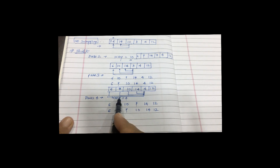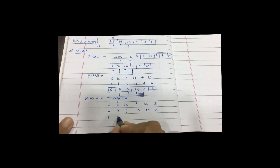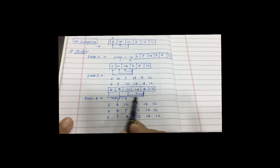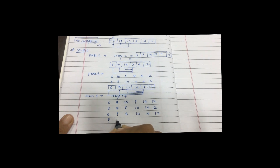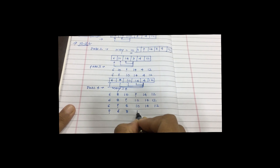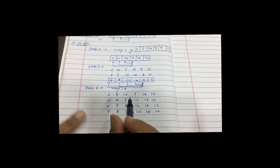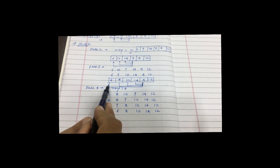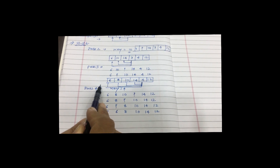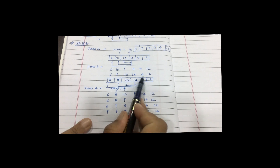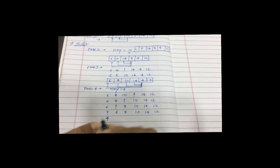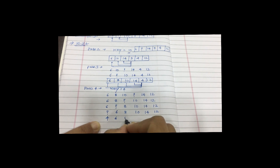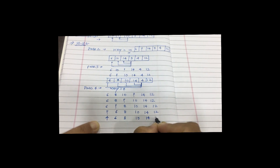Continuing pass 4: after shifting 8, 4 is compared with 6 — again shifting is necessary, 6 is shifted. Now we are at index 0, so there is no element below index 0 and comparison stops. The key element 4 is placed at position 0. At the end of pass 4, the array is: 4, 6, 8, 10, 14, 12.